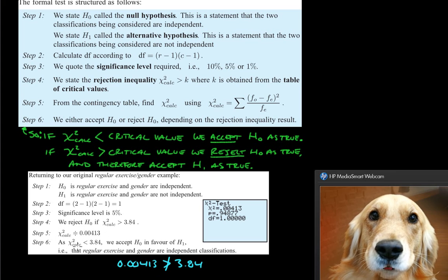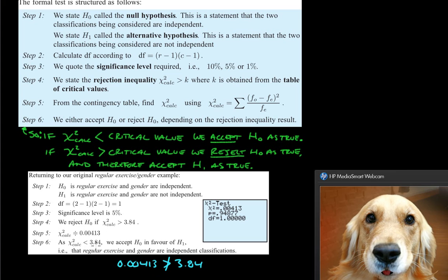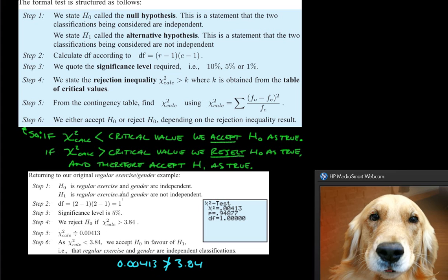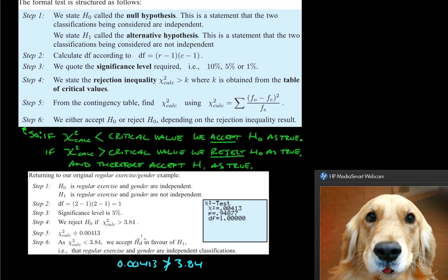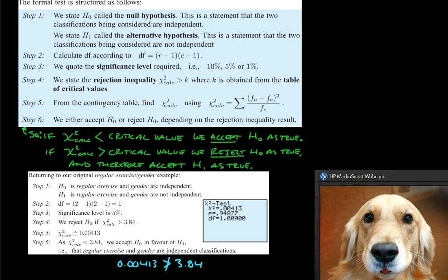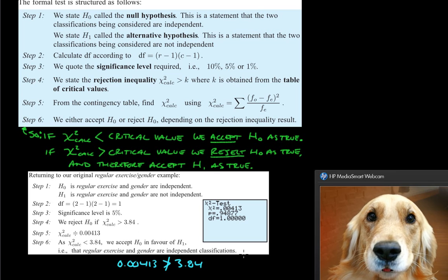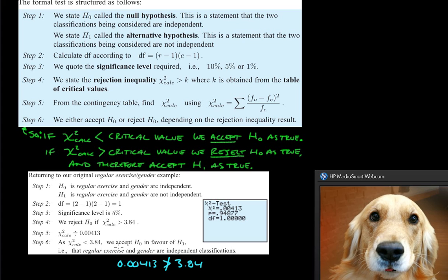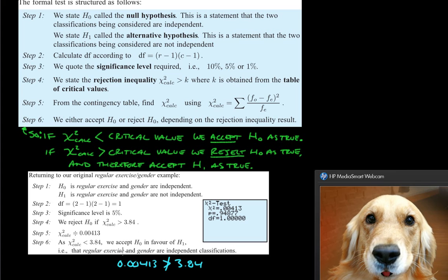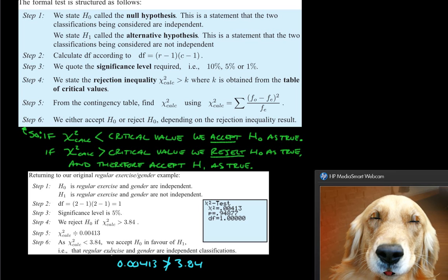So, since our chi-squared calculated is less than 3.84, we accept our null hypothesis in favor of the alternative hypothesis. So, in other words, that means that regular exercise and gender are independent classifications, meaning that regular exercise and gender are not related. So it doesn't matter what gender you are as to whether or not you exercise regularly.